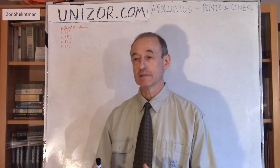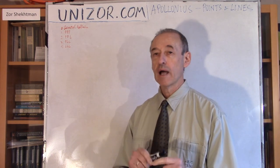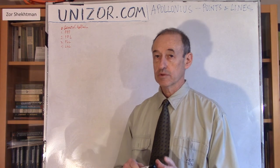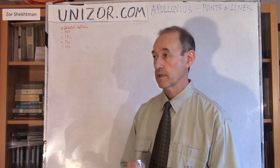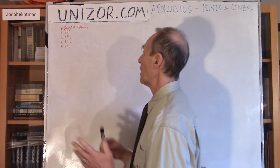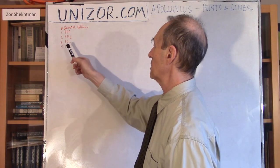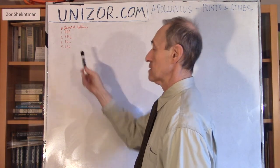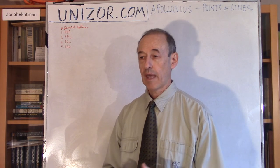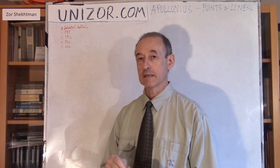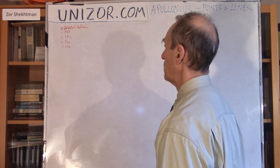The simple cases are those where the given three objects are only lines and points — no circles are given — and you have to construct a circle which is tangential to all three of them. There are different cases: three points, two points and a line, one point and two lines, and three lines. These exhaust all possibilities when only points and lines are the given objects. Let's do them one by one.